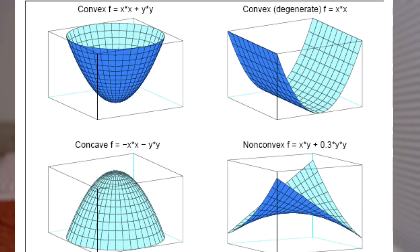Quadratic programming. Now imagine you still want to optimize something but it's not just a straight line anymore — there's a curve involved. Think of this like balancing two goals: you want high return but also low risk. Risk in many models grows like a curve, not a straight line. So your problem becomes a mix of straight lines like budget limits and curved ones like minimizing risk. Quadratic programming helps you find the best balance between two things that sometimes work against each other — there is a trade-off.